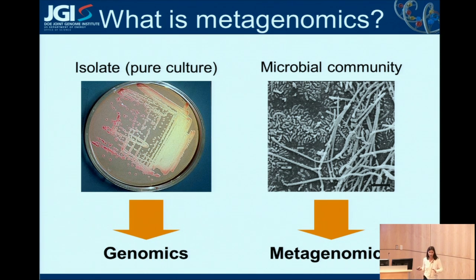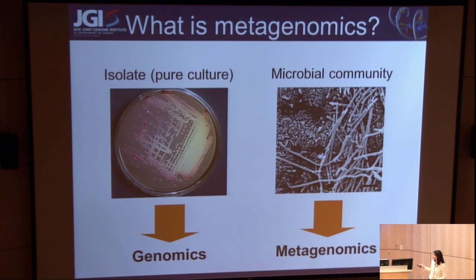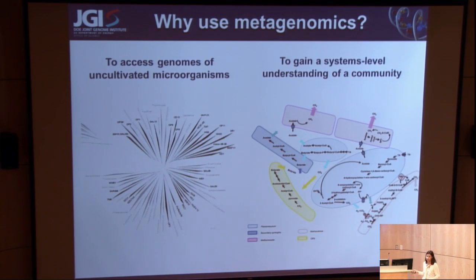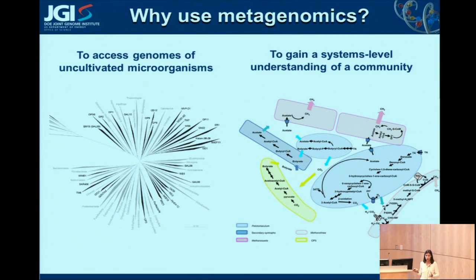Since not everyone here works on microbiology or metagenomics, I'll give a quick single-slide primer on metagenomics. The basic idea is that we consider anything metagenomics that involves sequencing DNA from a whole community of organisms. Genomics would typically deal with the DNA of just one organism, whereas DNA from a whole microbial community we call metagenomics. These communities can come from a lot of different environments, though we have some fairly specific interests at the DOE. The reasons for using metagenomics are really varied, but I'll cover the two most common ones.